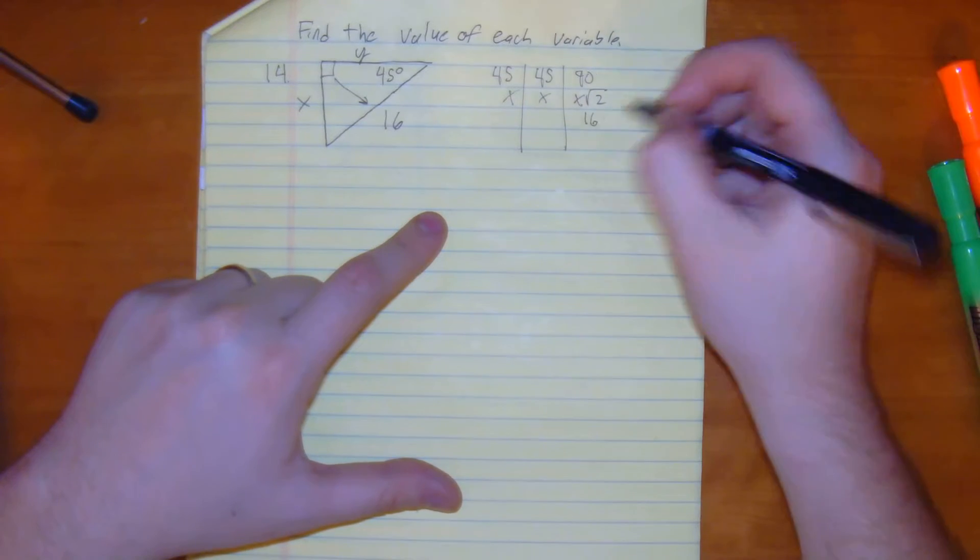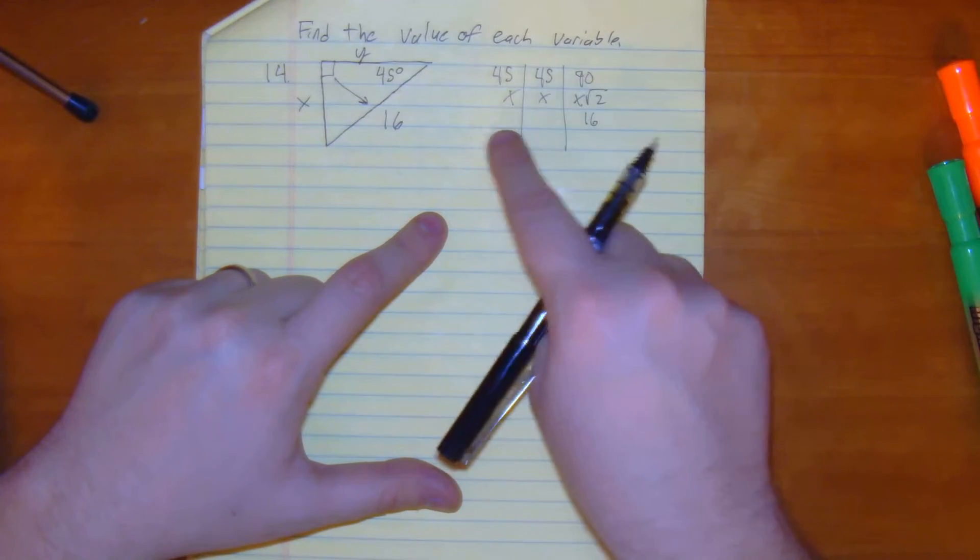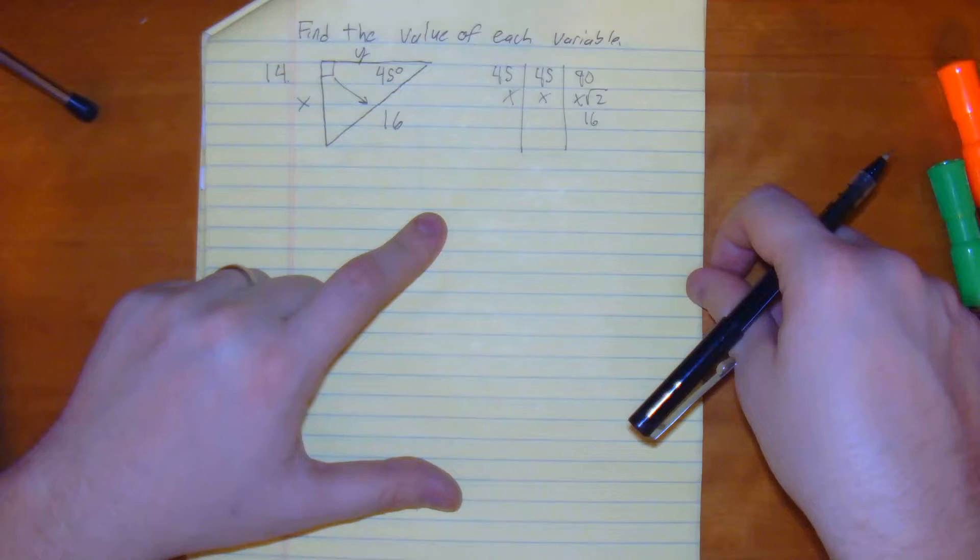Right here, this is our 16. But we want to know what x and y are, but our x is here, just so we're keeping the same variable.